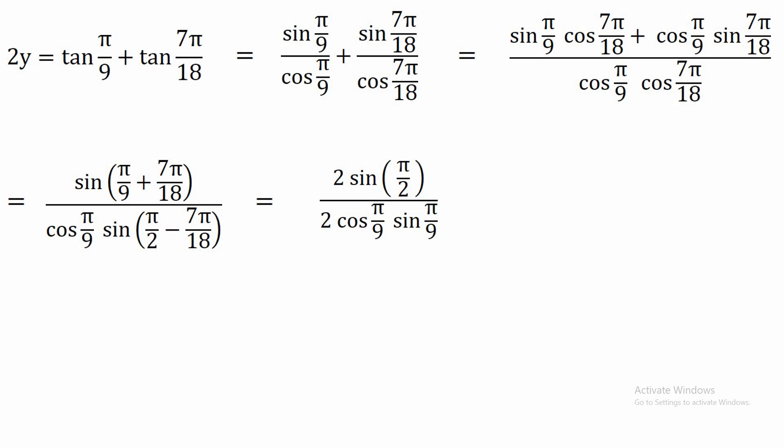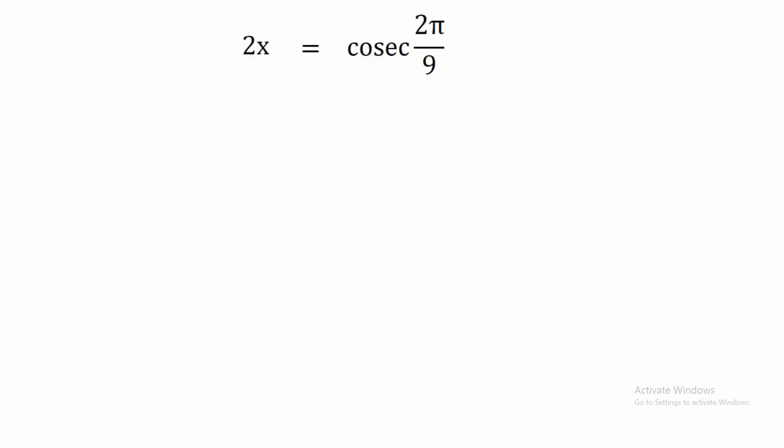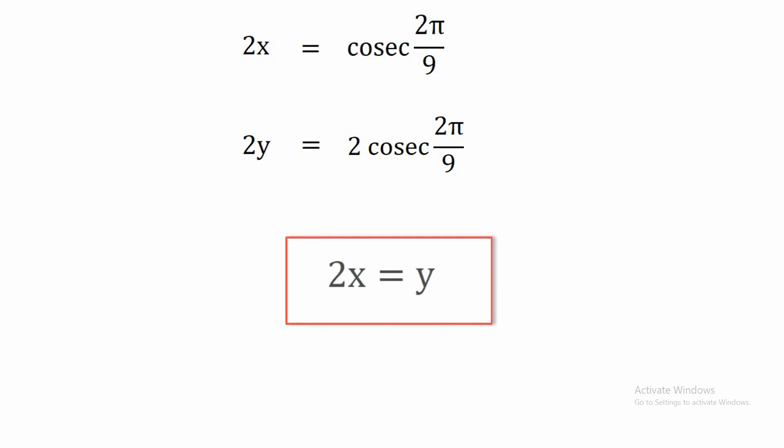In the denominator, we recognize the formula sin 2A = 2·sin A·cos A, so it becomes sin(2π/9). This gives us 2y = 2/sin(2π/9), which equals 2·cos(2π/9) — wait, that equals 2·(1/sin(2π/9))... simplifying, 2y = 2·cos(2π/9). Analysing both equations, we have 2x = cos(2π/9) and 2y = 2·cos(2π/9), from which we can clearly conclude that 2x = y.